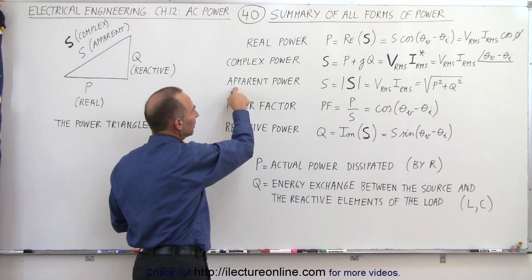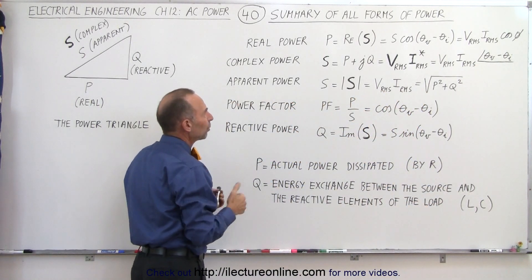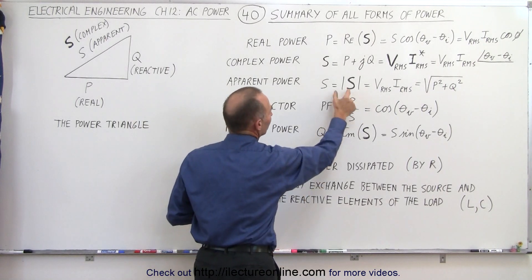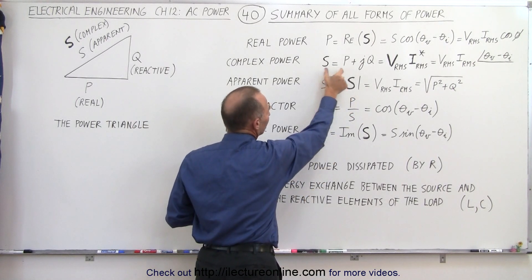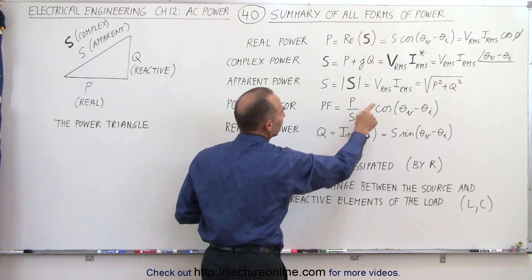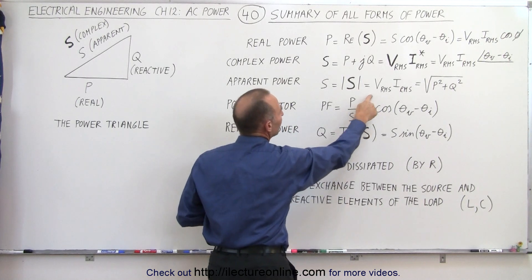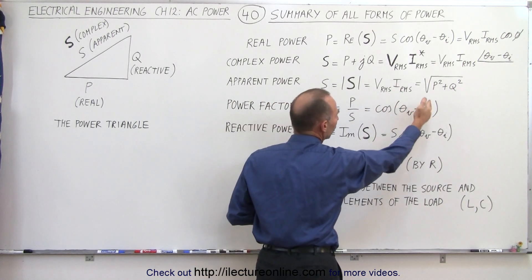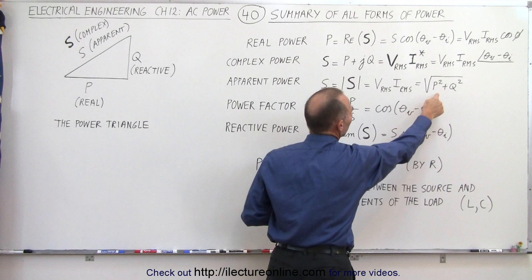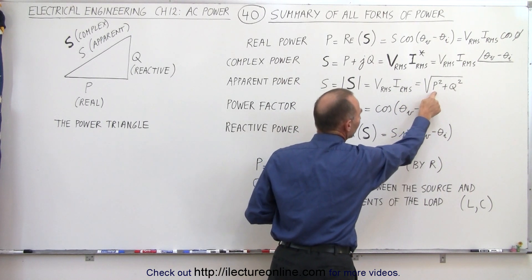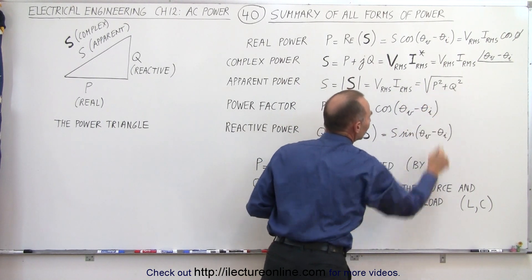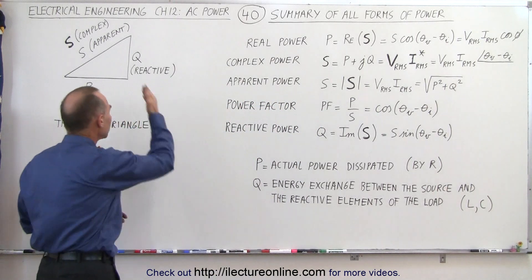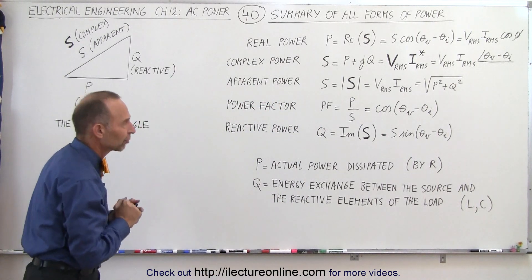The apparent power is the magnitude of the complex power. So we simply take the complex power and take the magnitude of that, which is the magnitude of the voltage times the magnitude of the current, or the square root of the real power squared plus the reactive power squared.